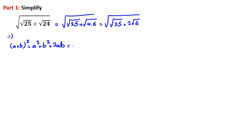If we want to write something like this, √25 is also equal to 5, so we have 5 + 2√6.